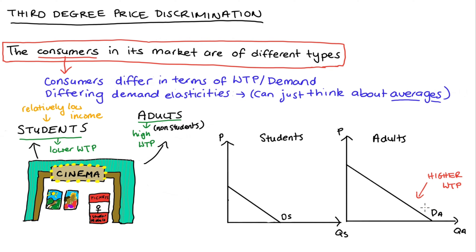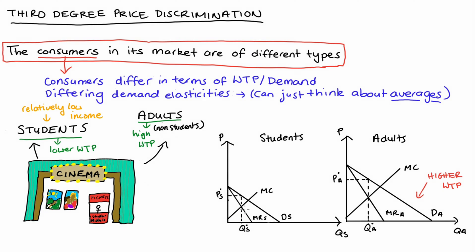If we profit-maximize over these two curves — drawing in a marginal revenue curve for each type and putting in our marginal cost — we can find the optimal quantity to sell to each type by setting the marginal revenue associated with each type equal to marginal cost. Reading the price off the demand curve, we can see that the optimal prices are different between our two types of consumers. In particular, P* subscript A, the optimal price for our non-student adults, is greater than P* subscript S, the optimal price for students. It would be best for the firm to charge students a lower price than non-student adults.